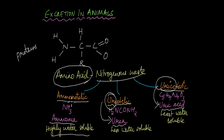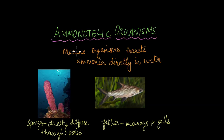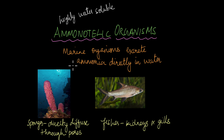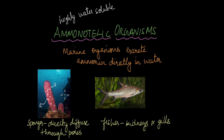Let's look at examples of each type. Starting with ammonotelic organisms: ammonia is highly water-soluble, which matters because ammonotelic organisms are mostly marine organisms. They just need to push the ammonia out of the body and it will readily dissolve in the surrounding water. Sponges, for example, have small pores on their body through which they breathe, and these pores are also used to push out the ammonia.